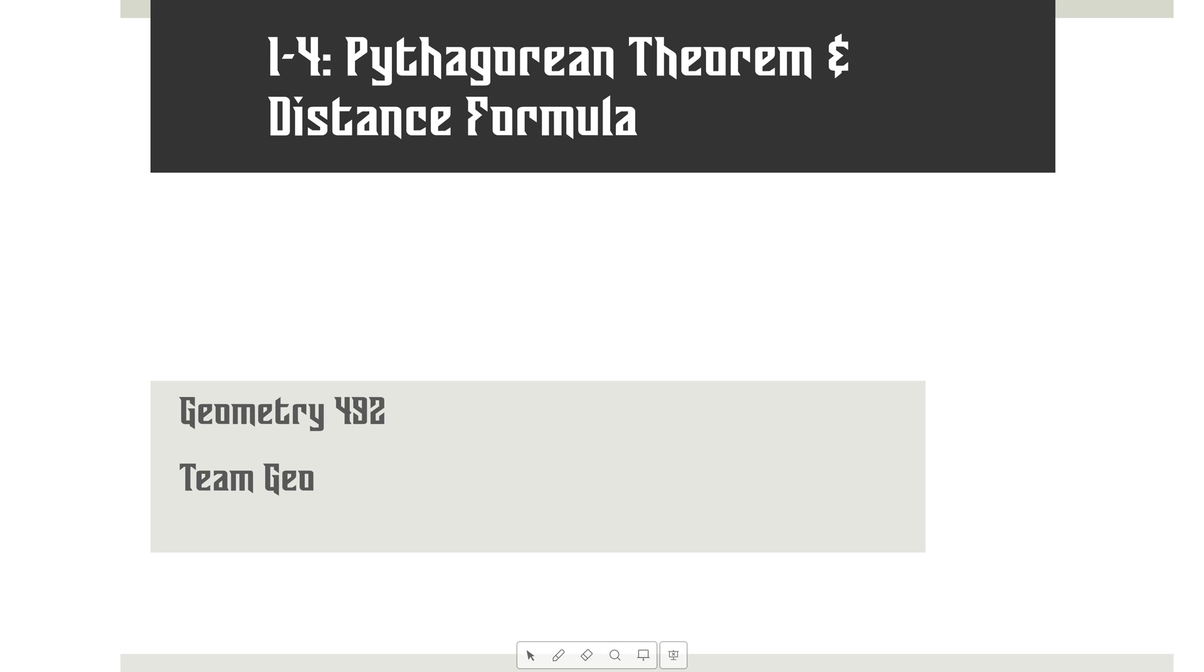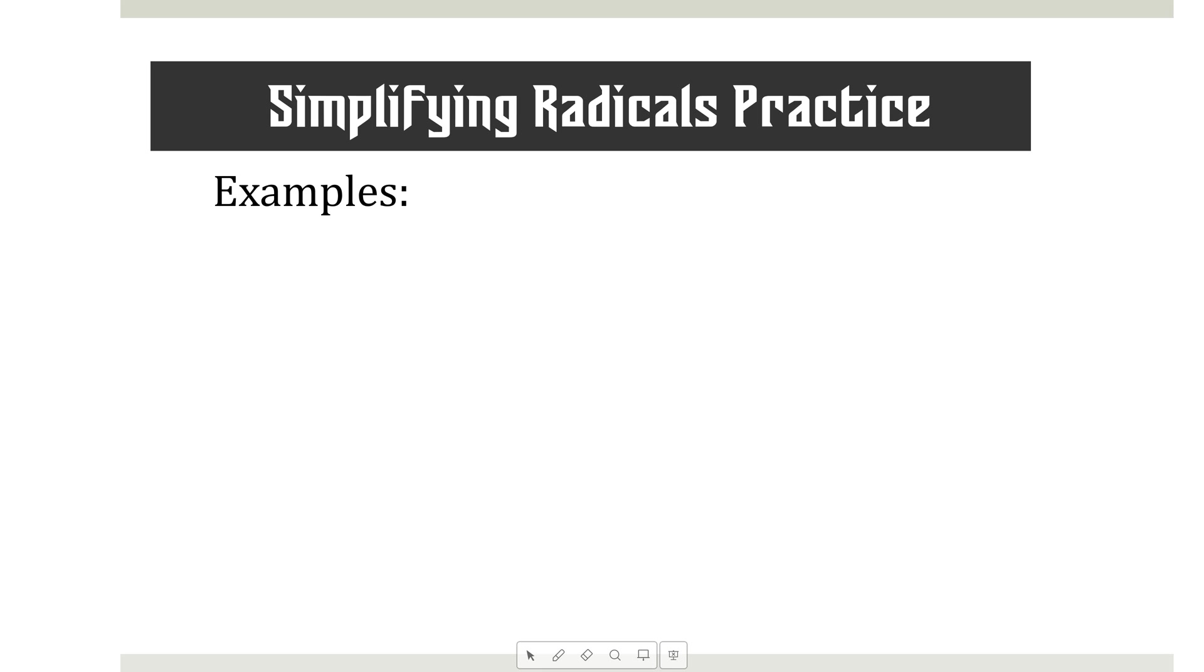So today we're going to go back and do a little bit of review. You've done the Pythagorean theorem before, you've done distance formula before, but I'm going to show you a different approach that you might find more helpful. Let's start with a little bit of review here. Simplify the square root of 72, please.